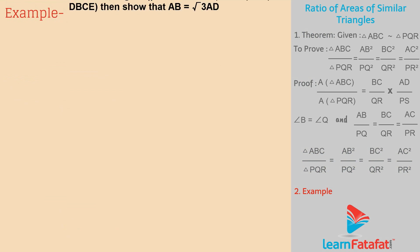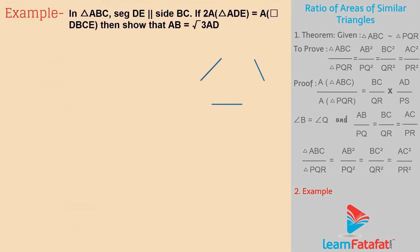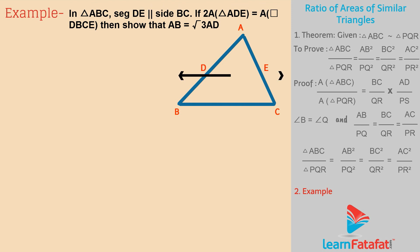Example: In triangle ABC, segment DE is parallel to side BC. If 2 into area of triangle ADE is equal to area of quadrilateral DBCE, then show that AB is equal to root 3 into AD.